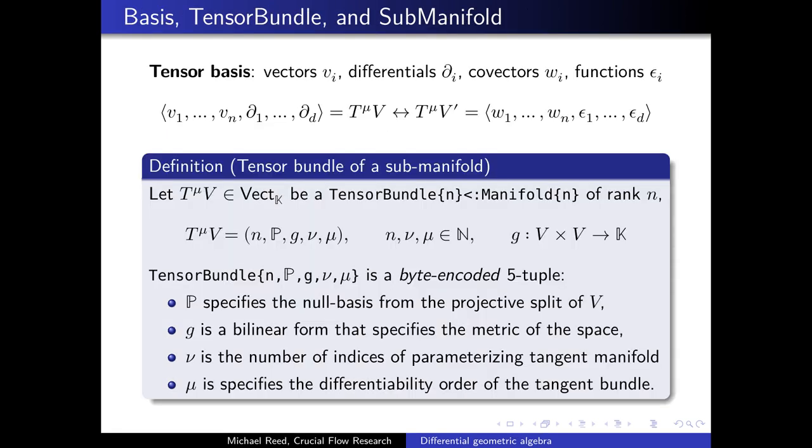To start with, we have a tensor basis of vectors, differentials, co-vectors and functions. We can encode our choice of these using a byte encoded tuple which we name a tensor bundle. The tensor bundle encoding is an implementation choice and usually we want to at least have a quadratic form in the form of a metric tensor.